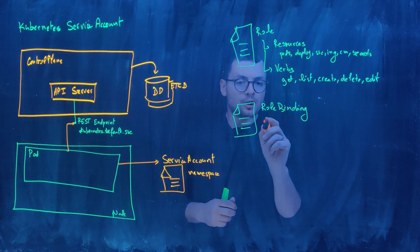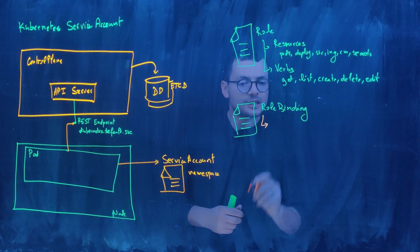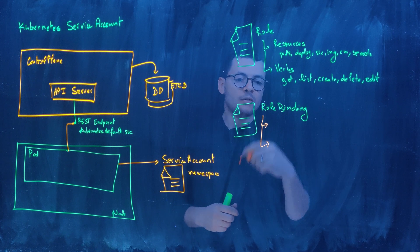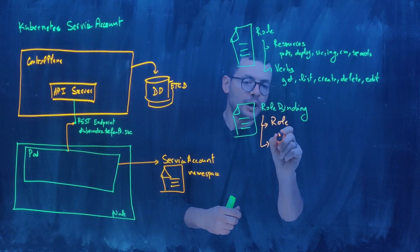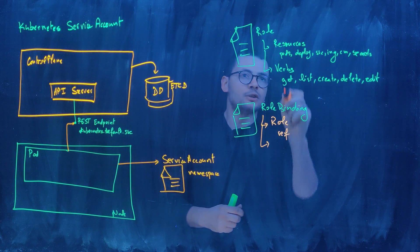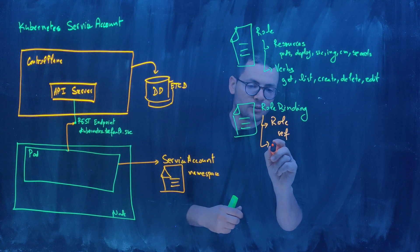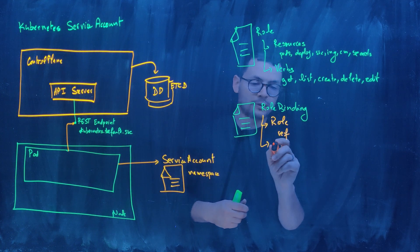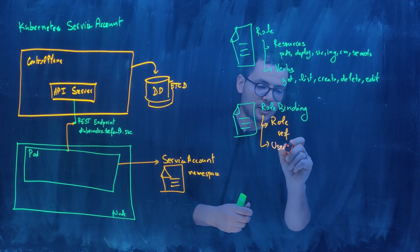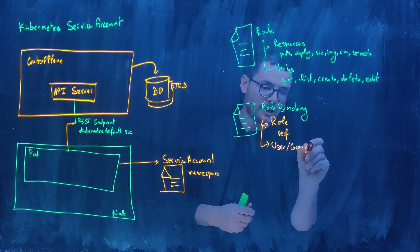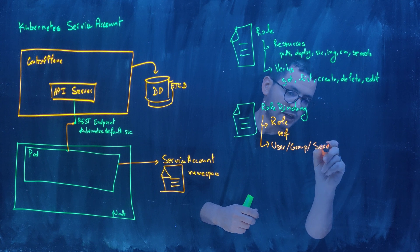And the same will apply for role binding, another Kubernetes object that will describe two different attributes. First attribute is going to be the role. So it will bind to a reference role. In this case, that's going to be the role described here. And then the second one will describe to whom to give access to this role. So that's going to be my user or a group within my Azure Active Directory, or in our case here, it could be also a service account.